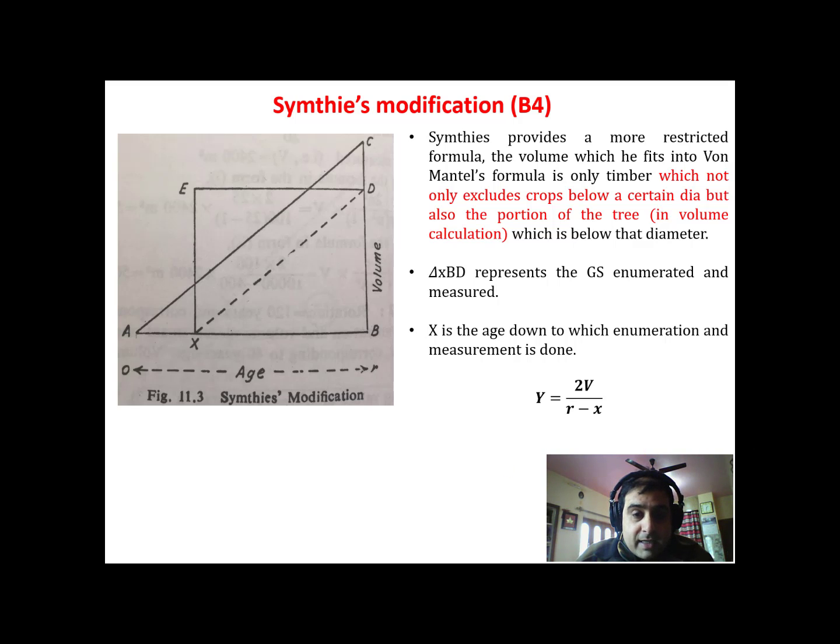So in a way, you can say if you see here this is your A to B. This is your AB. This is the rotation age.